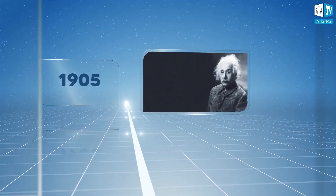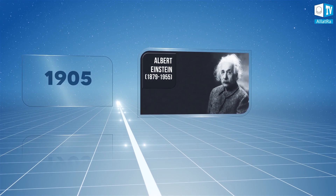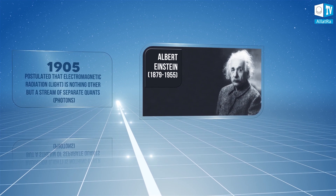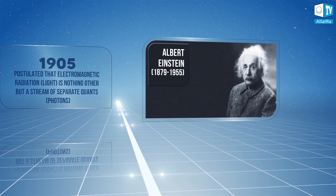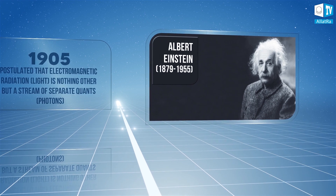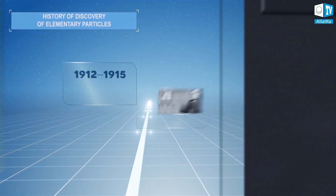In 1905, Albert Einstein, developing Planck's idea, postulated that electromagnetic radiation, or light, is nothing but a stream of separate quanta — that is, photons.